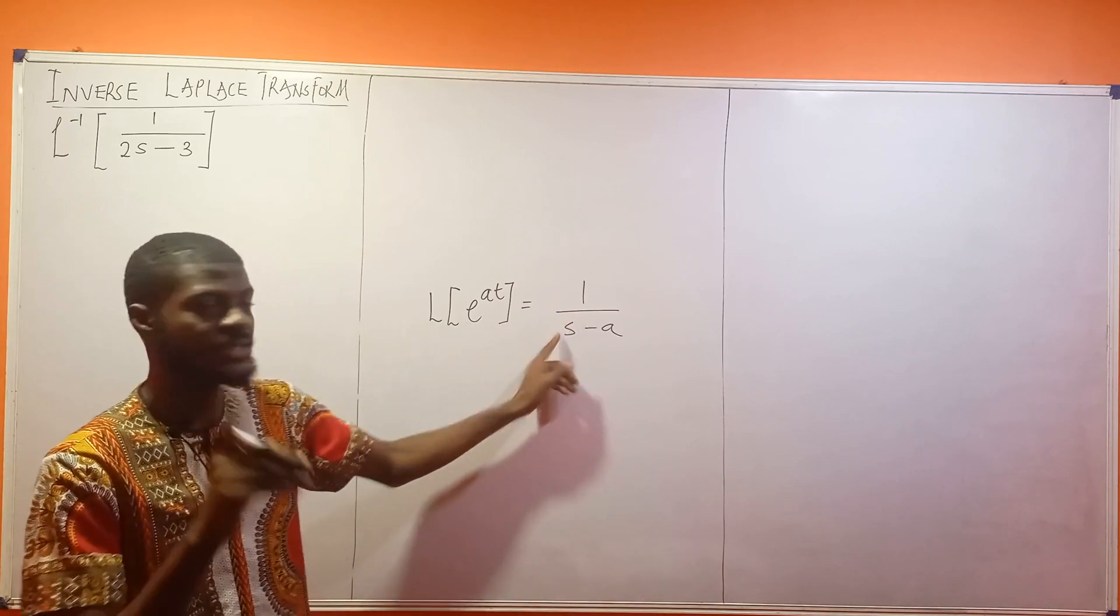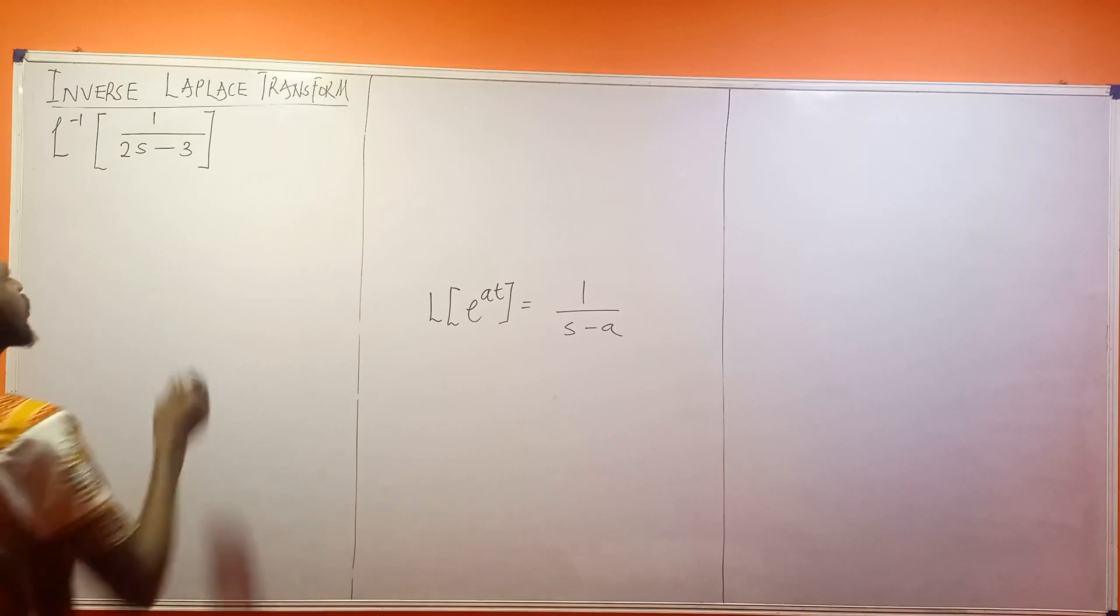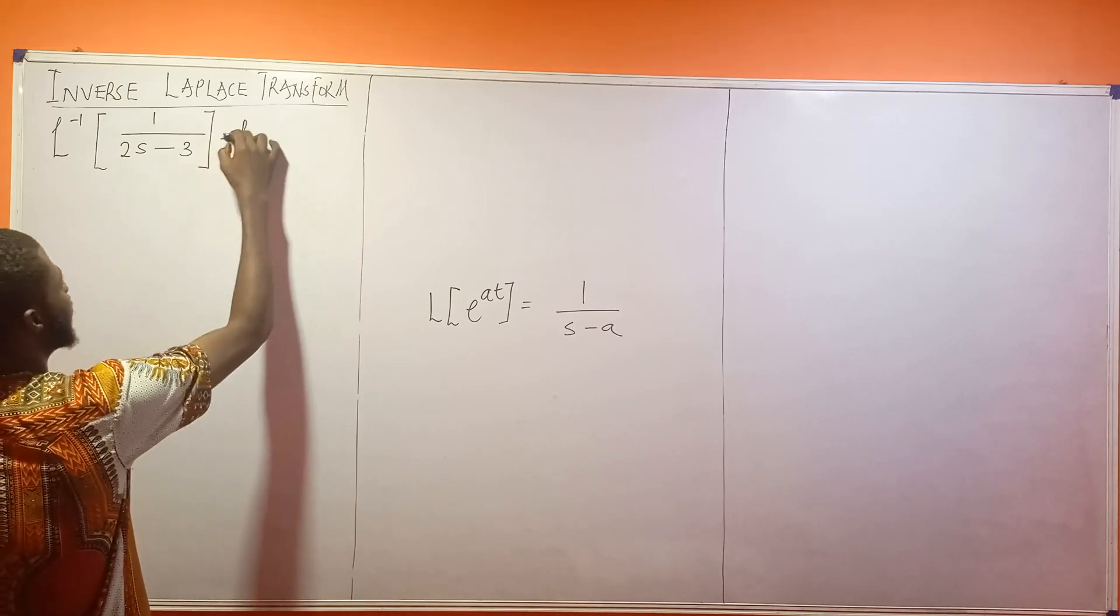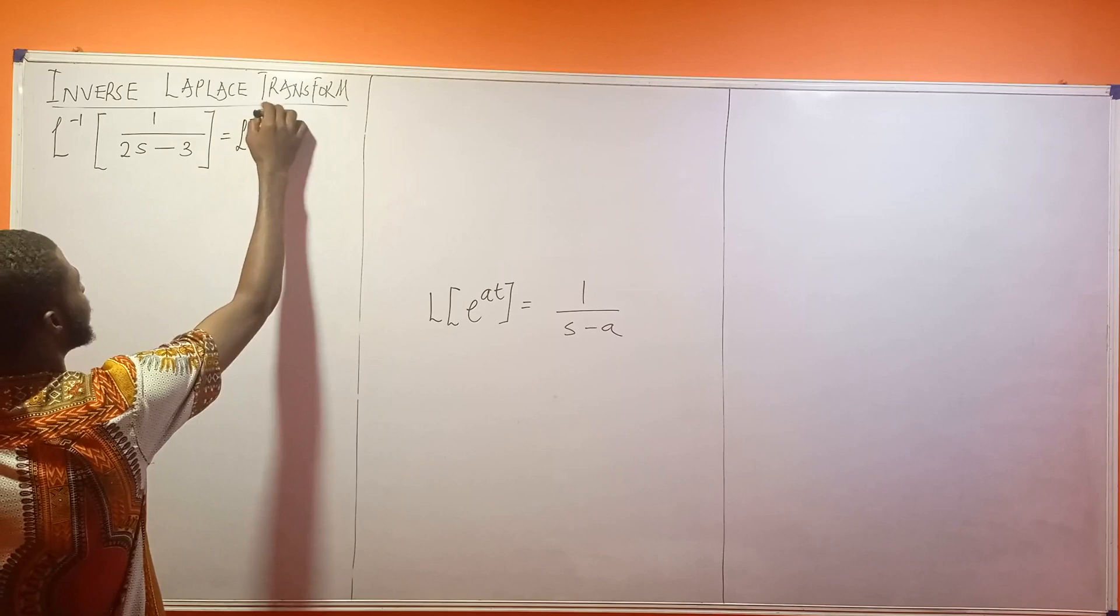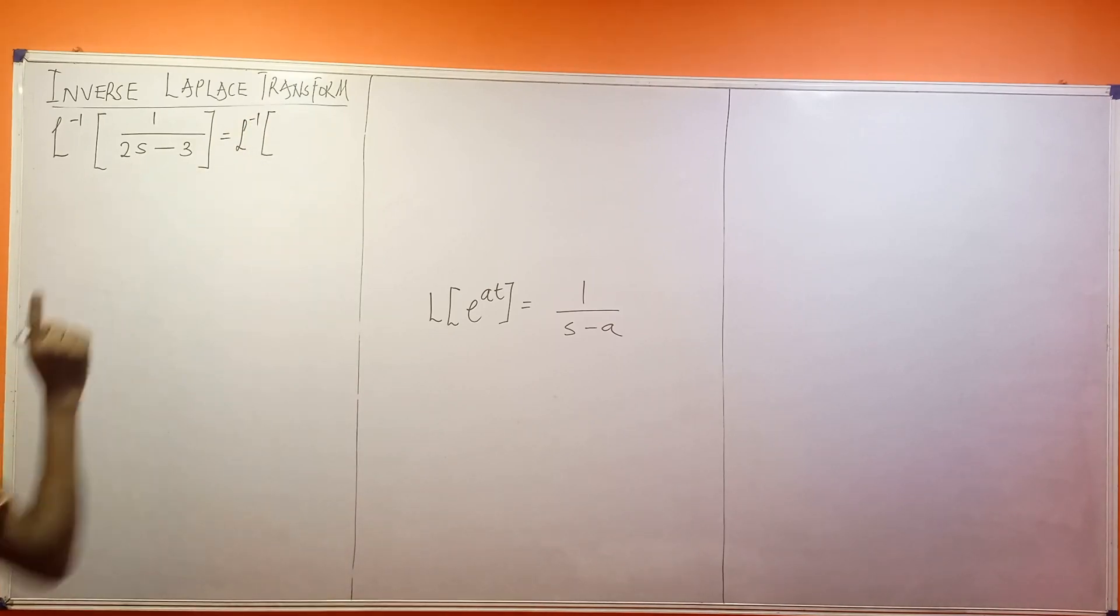So right now this has power of 1 and also has coefficient of 1. These two here have to then change. So let me rewrite this as the inverse Laplace of, since I need the coefficient of s here to be 1, I can divide everything by 2.